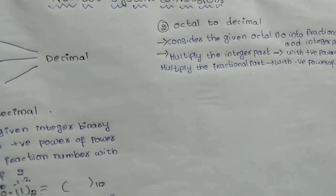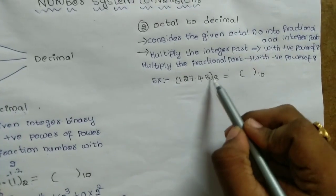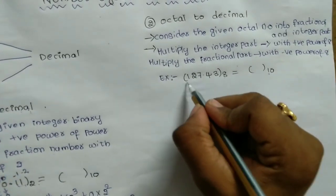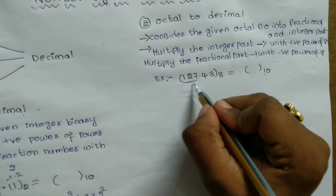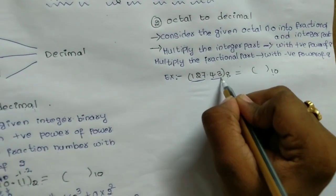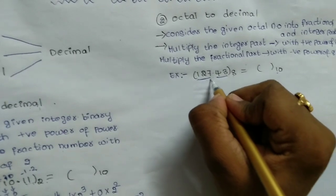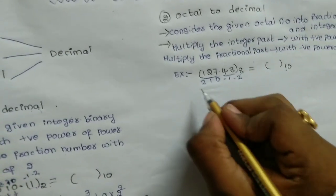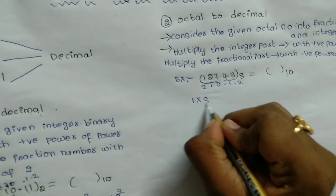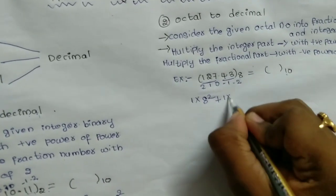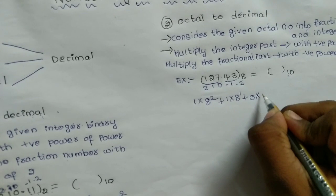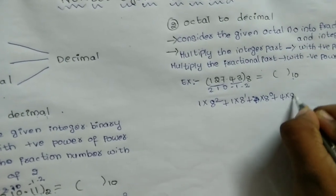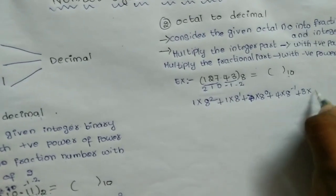So we multiply it. Here we go to an example: 127.43 with suffix 8 (octal). We multiply: 1 × 8² + 2 × 8¹ + 7 × 8⁰ + 4 × 8⁻¹ + 3 × 8⁻².